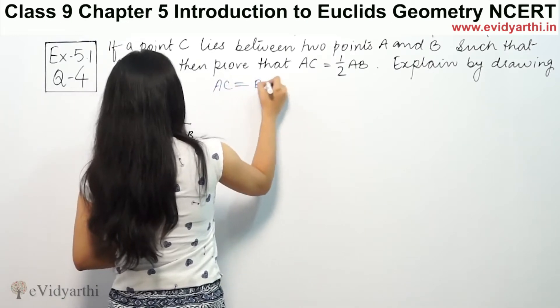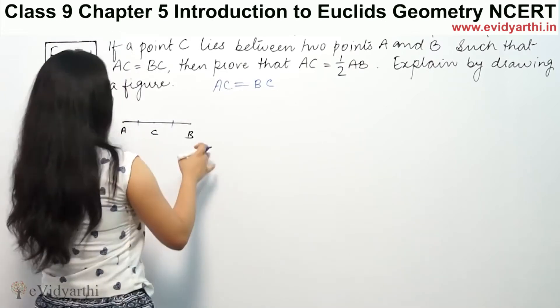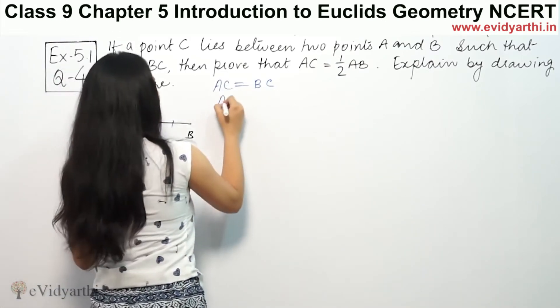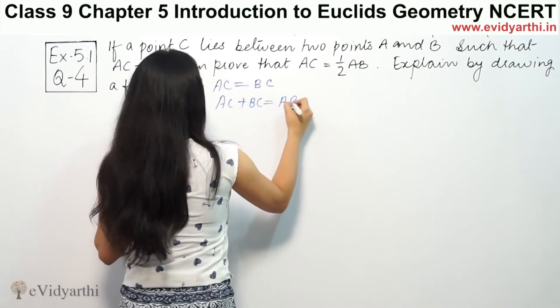AC is equal to BC. And when we add AC plus BC, it equals to the whole AB. So AC plus BC is equal to AB.